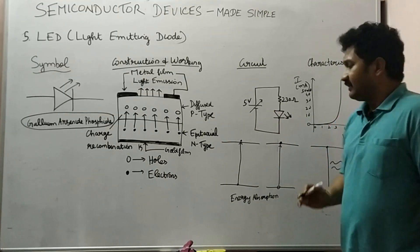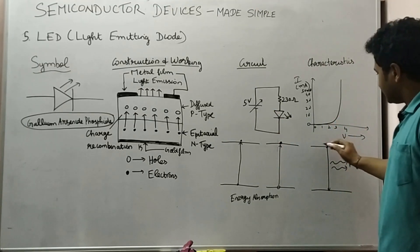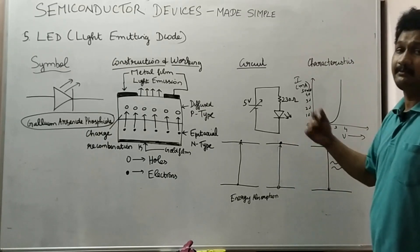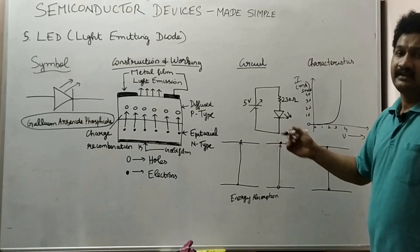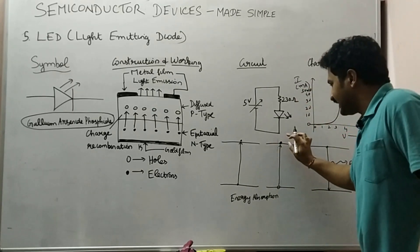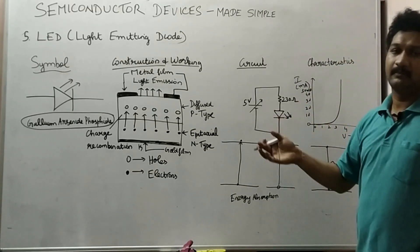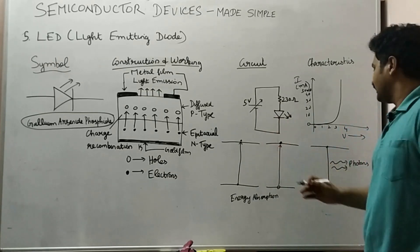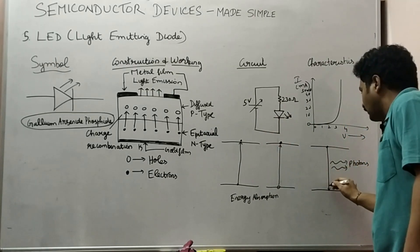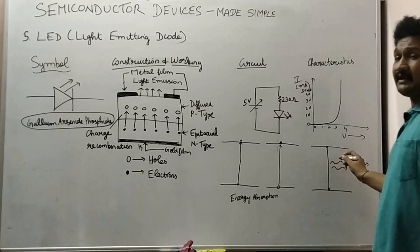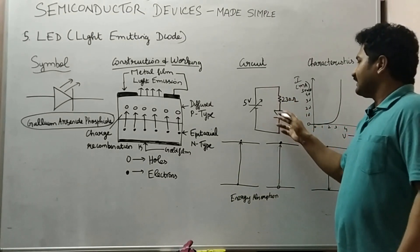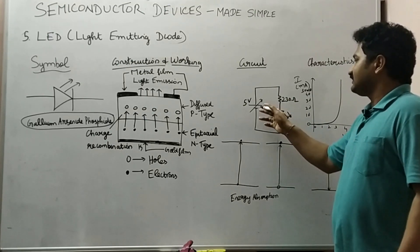After photons are emitted, recombination takes place. The time the electron stays at the higher energy level is called the recombination time — the time taken for the electron to remain in the higher energy level before recombination. Recombination occurs when the electrons move from the higher energy level to the lower energy level, and at that same time photons are emitted.